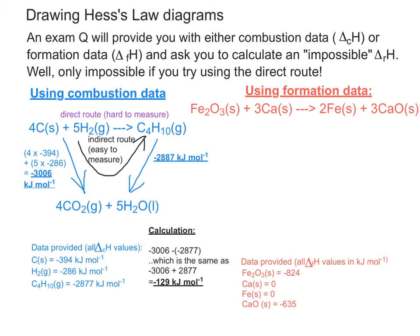So elements are always given a formation enthalpy of zero because they've been there since the inception of the universe. So therefore, because they don't have to be formed as such from anything else, and they're there already, there's no energy requirement needed to make them. So we give them a zero value and elements are always zero value.